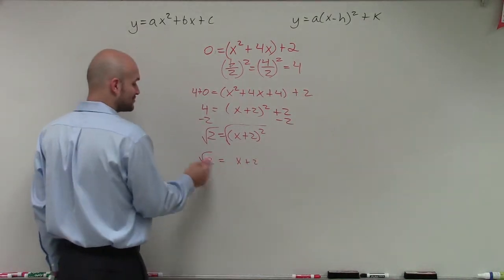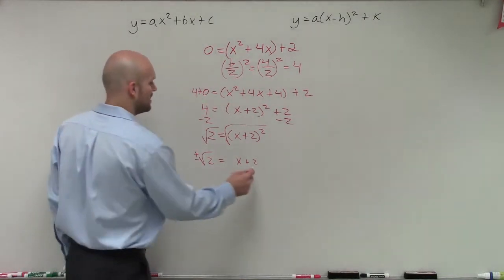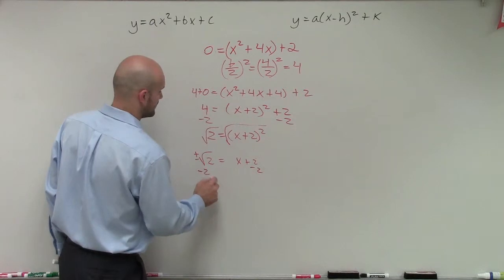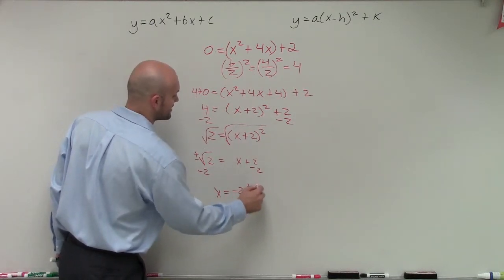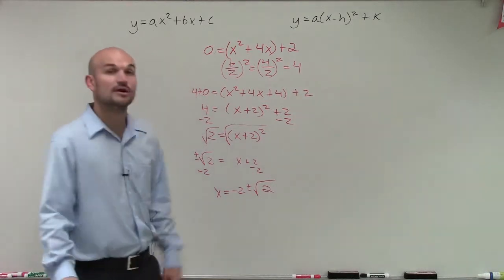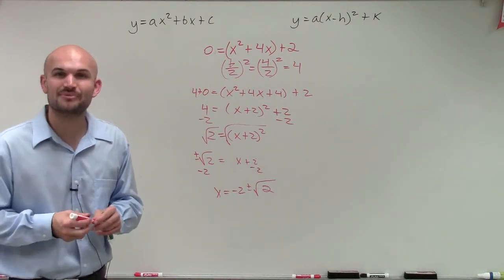And then remember, when I take the square root, I have to make sure I introduce the positive and the negative. And then I'll subtract 2. Therefore, my final solution is x equals negative 2 plus or minus the square root of 2. So there you go, ladies and gentlemen. That is how you solve the quadratic equation by completing the square. Thanks.